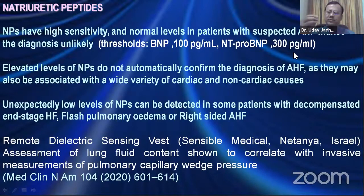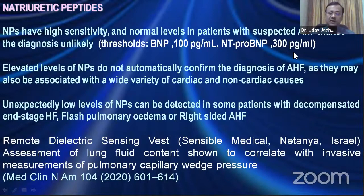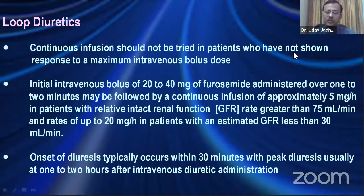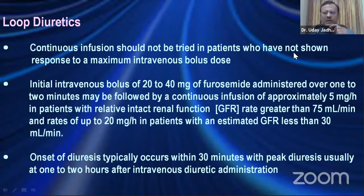Sometimes we see very low NPs in patients with end-stage severe heart failure, flash pulmonary edema, or right-sided heart failure. There are variable devices emerging — one is the dielectric sensing vest, which helps assess lung water content and correlates with invasive pulmonary wedge pressure. On diuretics: if an IV bolus dose is not working, continue with the bolus dose, aiming for a higher concentration of furosemide with a diuretic response expected within 30 minutes.